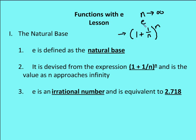We call E the natural base, and E is an irrational number. It's equivalent to about 2.718. For your purposes, you can just think of E as a number — the number 2.718.